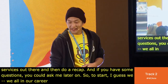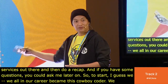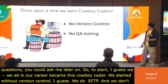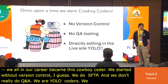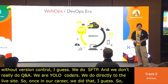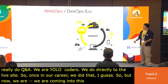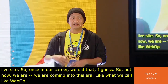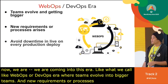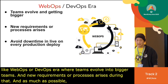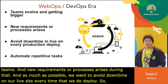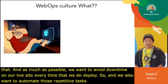To start, I think at some point in our careers we all became 'cowboy coders' — no version control, using SFTP, no QA, deploying directly to the live site. But now we're entering the WebOps and DevOps era, where teams have grown and new requirements and processes arise. We want to avoid downtime on our live site every time we deploy and automate repetitive tasks.